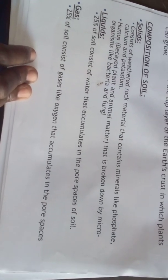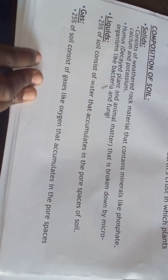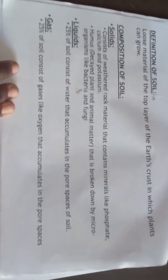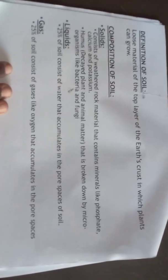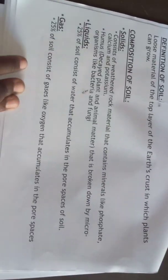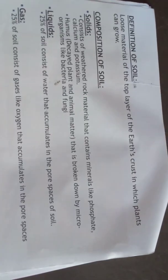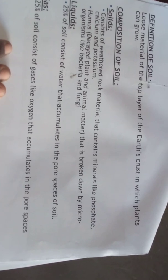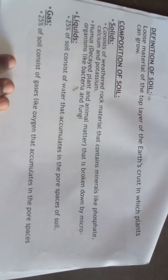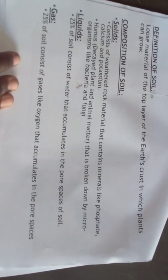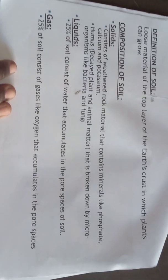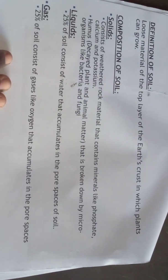Before we look at composition, understand that soil is a resource because it is a material that we need for our development — in the sense that we grow our food and crops on soil. The more food we grow, it also means we can get other raw material resources for our industries, which leads to development. So soil is a very important resource in terms of food and development within our society.